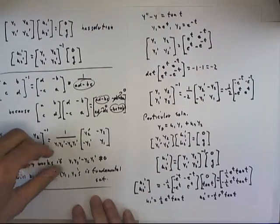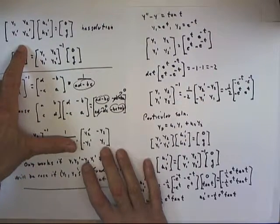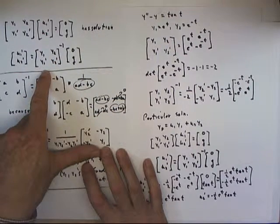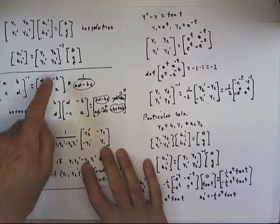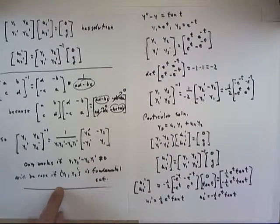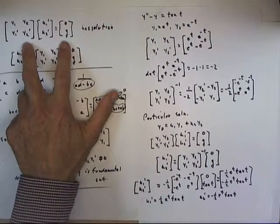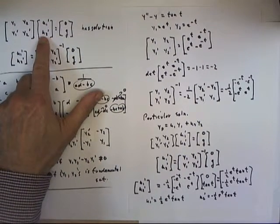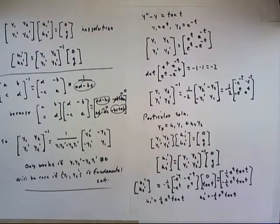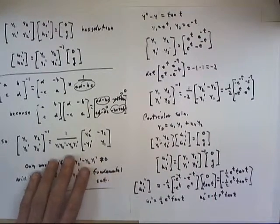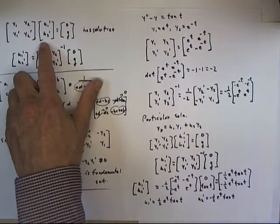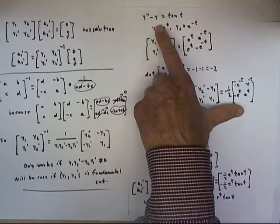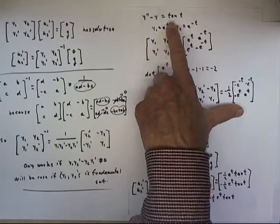In the preceding, we saw how the matrix equation shown here has solution, and we worked out some of the details of that solution. Now this matrix equation is a solution for u1 prime and u2 prime of a non-homogeneous second-order equation.